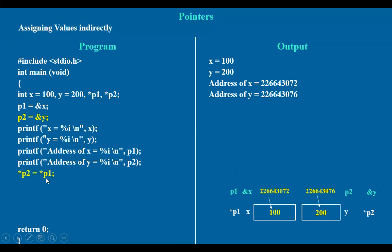Now let's do a small change: `*p2 = *p1`. Star p2 means the value stored at the address p2 points to — that is 200. We have assigned star p1, which is 100. So this 100 is assigned to star p2, meaning the y value changes from 200 to 100. We are changing its value indirectly — 100 taken from star p1 is assigned to that particular memory location through p2.